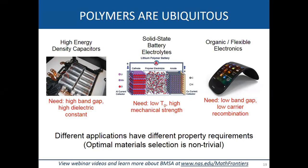Depending on which application you're interested in, the property requirements for the polymers will vary. For electrostatic capacitive energy storage in electric vehicles, you need polymers with a large band gap — a measure of how good an insulator the material is. Larger band gap means a better insulator. You also need a high dielectric constant, which measures how well the insulator can screen electric field.